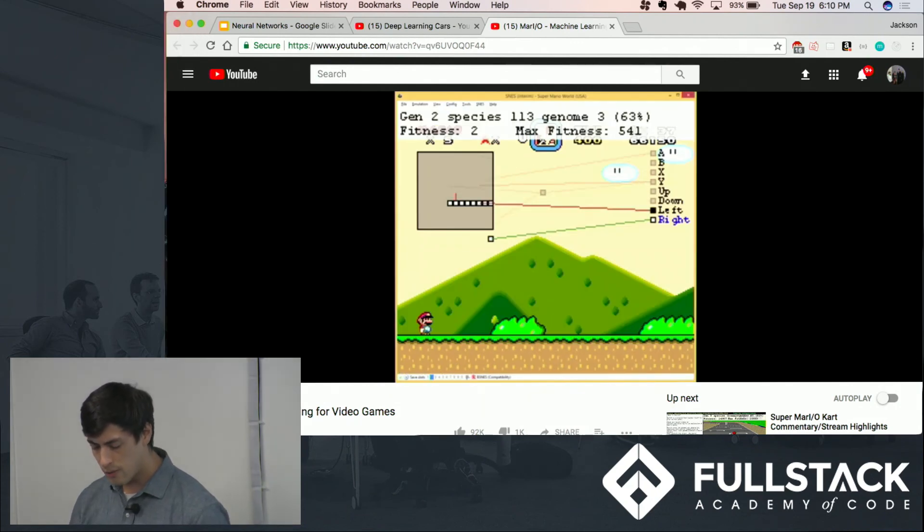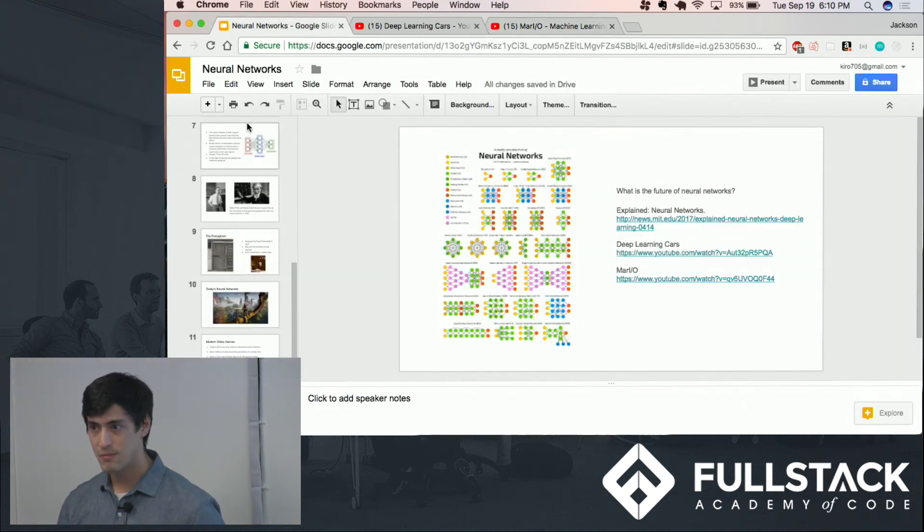So neural networks seem like a very powerful tool. I am excited to try and implement one at some point. What do you guys think the future of neural networks might be, or what you'd want to try to implement? Is anyone excited about them, maybe? Maybe. Okay, cool.